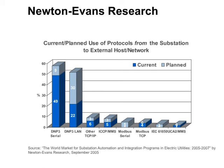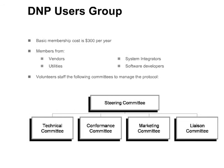Furthermore, DNP-3, especially land-based DNP-3, is the leading protocol for planned usage in this application. The DNP-3 protocol is owned by the DNP-3 Users Group and is available to all members. Basic membership cost is only $300 per year. The DNP-3 Users Group currently has members from vendors, utilities, system integrators, and software developers. All of the committees that make up the DNP-3 User Group are staffed by volunteers.